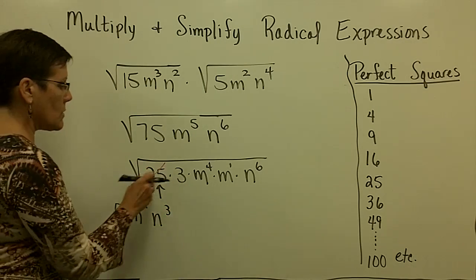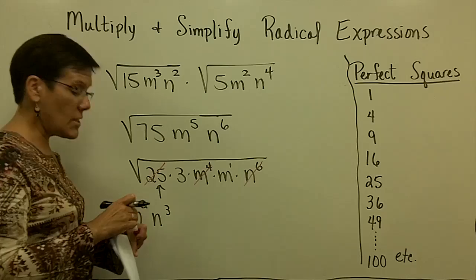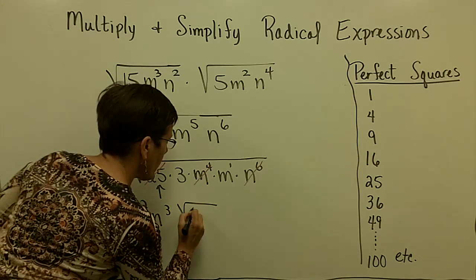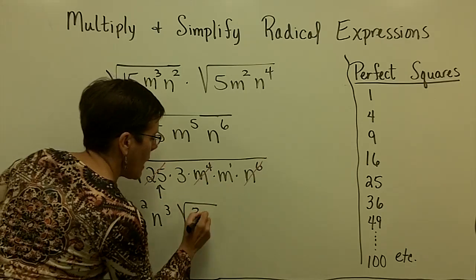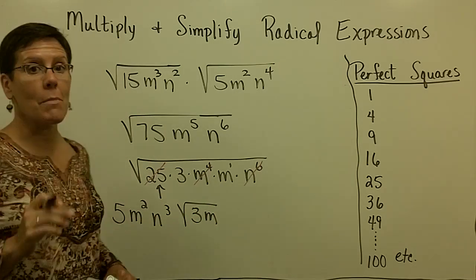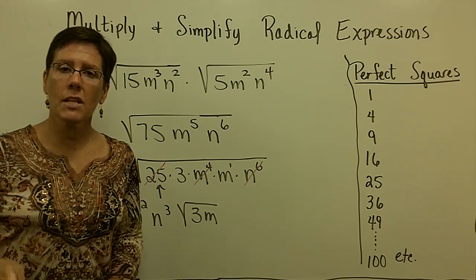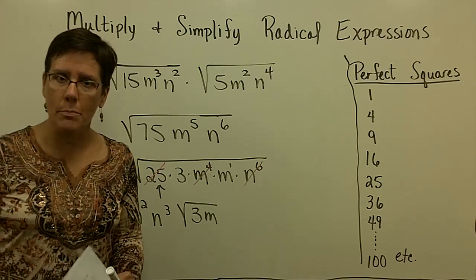I'm going to cross that off, that off, and that off because I've dealt with them. And what stays under the radical or the radicand is this 3 and that m. And I'm all done. I have multiplied and I have simplified. This could be the toughest topic in working with radicals is to simplify them.